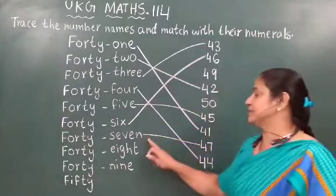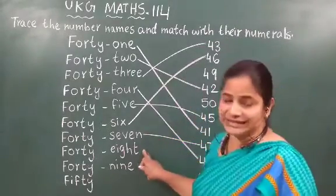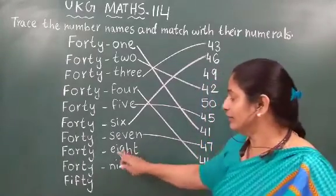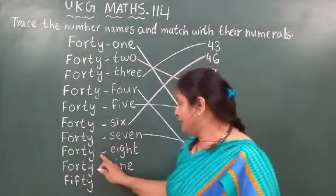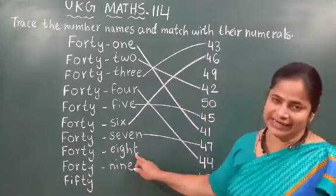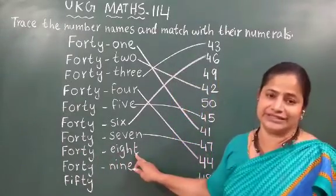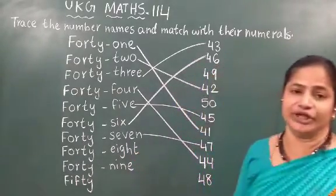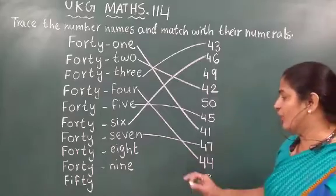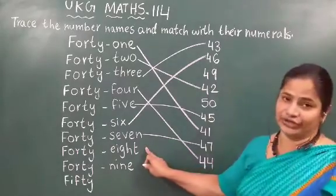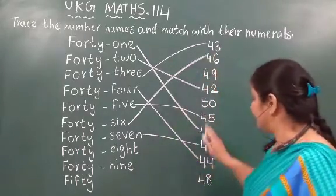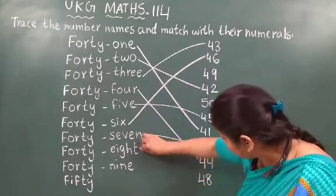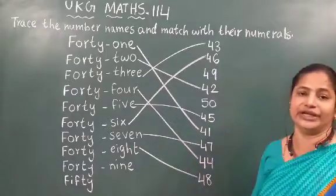Now after 47, the next number is 48. What is the spelling? F-O-R-T-Y E-I-G-H-T, 48. This is the number name, the spelling. Now you have to find out the numerals of 48. You can find it here — it is already written. You can match the numerals of 48.